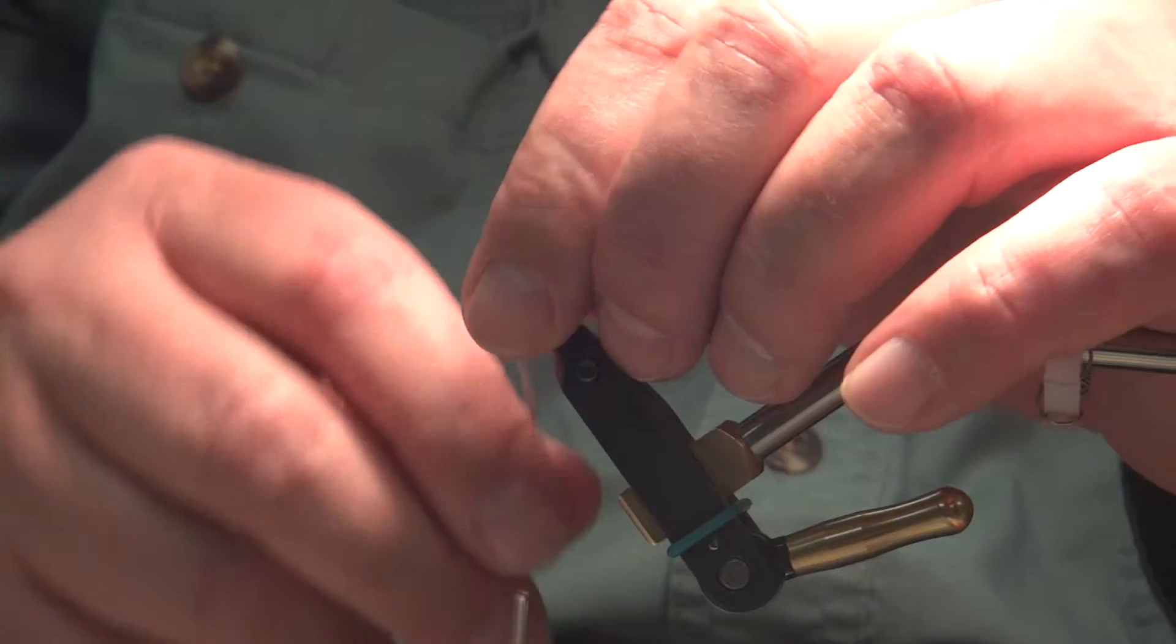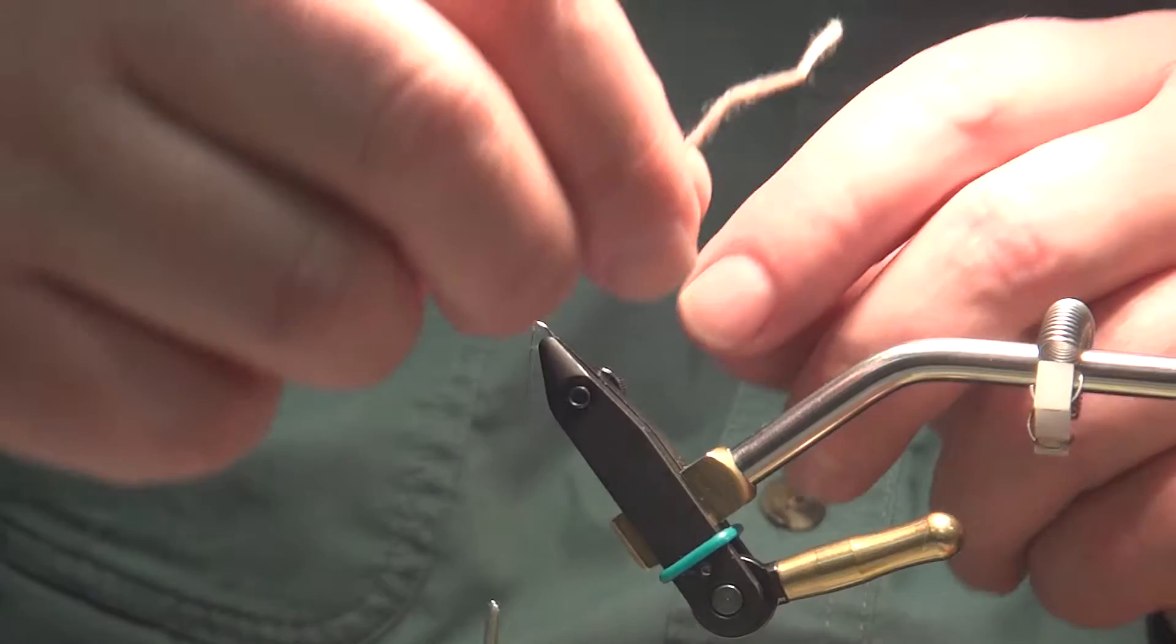So Tom Waits, the guy that was here before, he fishes this fly a lot in Wisconsin. He does very well. I was just going to say, it's a nice looking scud. Yeah, it's basically a scud.